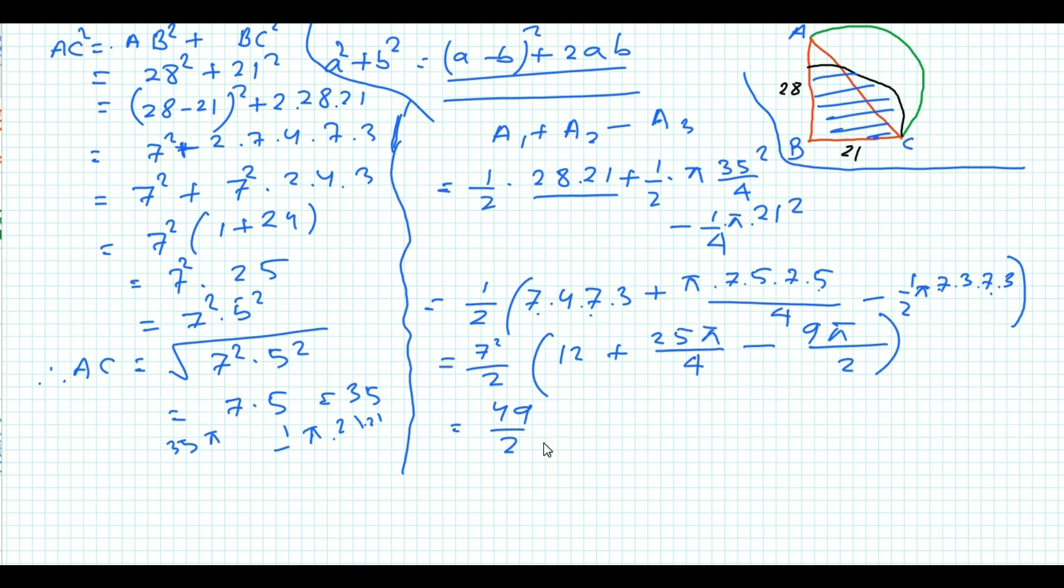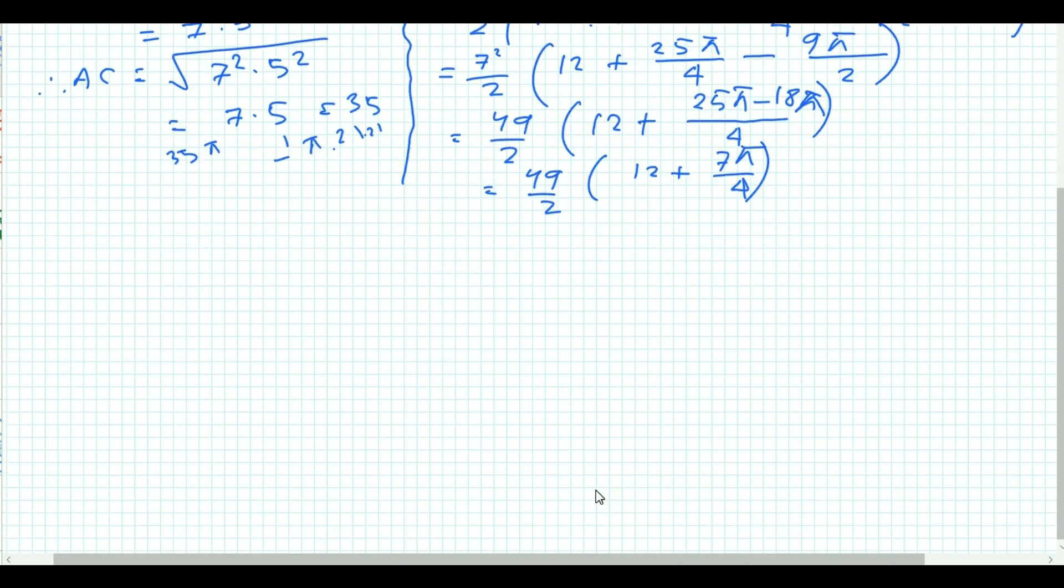So, it becomes 49 by 2, 12 plus, if I take LCM, we will find 25 pi minus 18 pi. 49 by 2, here, 12 plus, 15 minus 8, equal to 7 pi by 4.